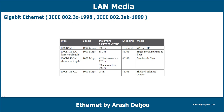In Gigabit Ethernet, the frame format remains the same, and it still uses CSMA/CD. Full duplex operation is possible. Differences appear in the encoding at the physical layer. Ethernet works at layers 1 and 2. There is no difference in layer 2 characteristics between Ethernet, Fast Ethernet, Gigabit Ethernet, or higher versions. Differences between these technologies exist at layer 1 — in encoding and physical features.